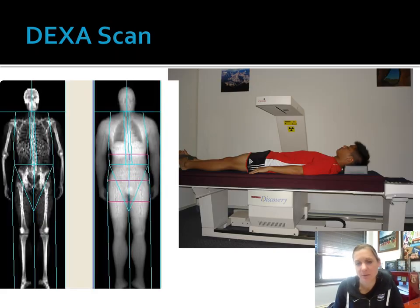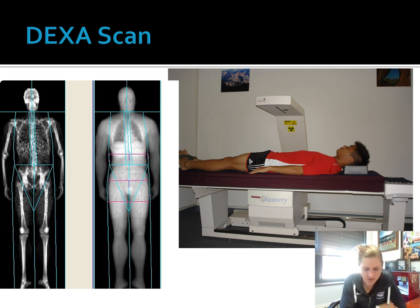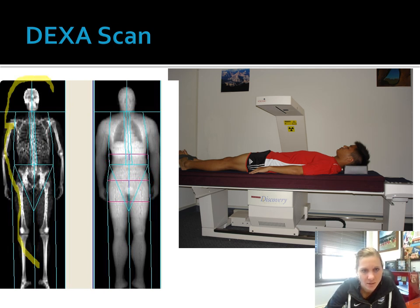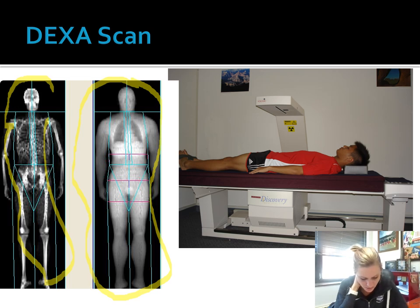The DEXA scan is one that we don't have access to because we don't have a DEXA scanner — they're very expensive. We see them in the hospital setting, more likely to look at bone and bone density. The DEXA scan gives us an estimate of bone density, bone mineral content, and it can also give us information about body fat. It can show us soft tissue as well. It is a very precise, very reliable estimate of body composition.